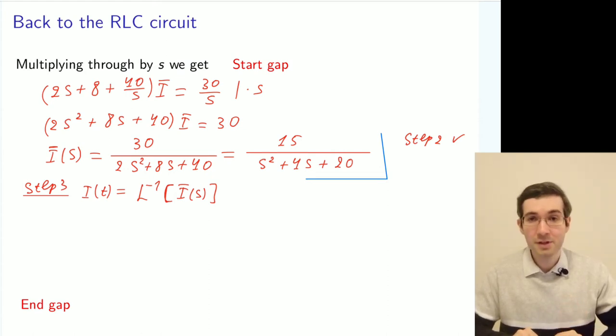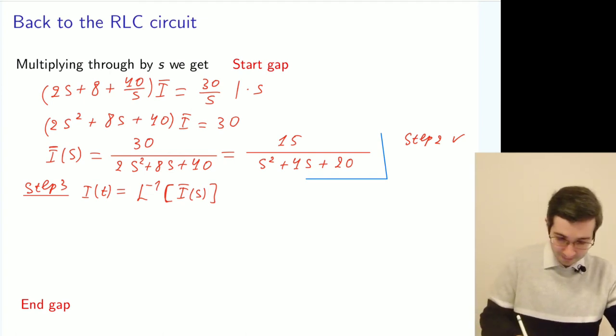I'm certain that most of you figured out that you need to use completing the square in the denominator. And that's correct. So what we do is we complete the square.